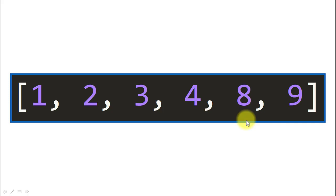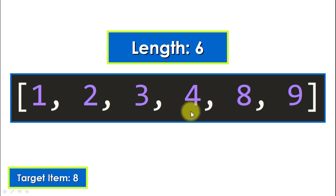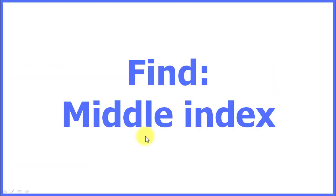Let's see this example step by step. Let's say we have a target item of eight — we want to find this item in the sequence and initially don't know if it exists. The first thing we do is get the length of the sequence, which in this case is six because we have six elements. Here we can see the indices of the sequence visually.